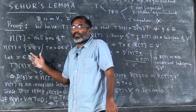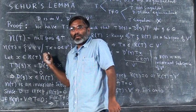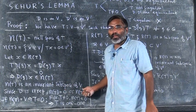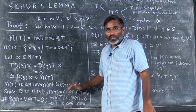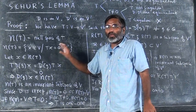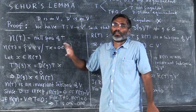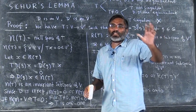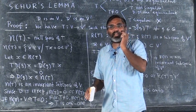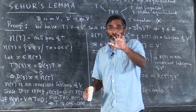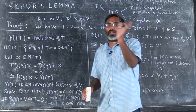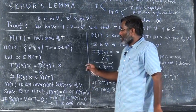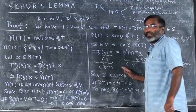So it is an invariant subspace of V. Is this clear? So how do we show something is an invariant subspace? When a group representation acts on the element of the vector space or the subspace, it should not go out of that subspace, correct? So same thing is here.